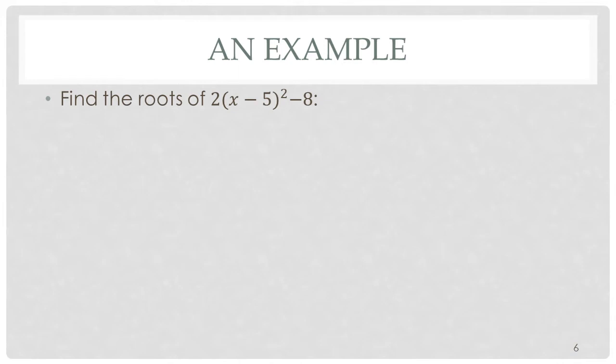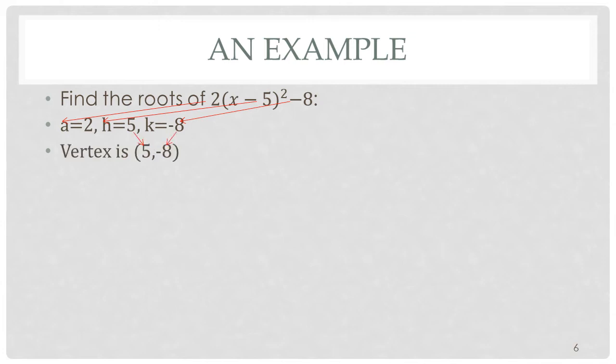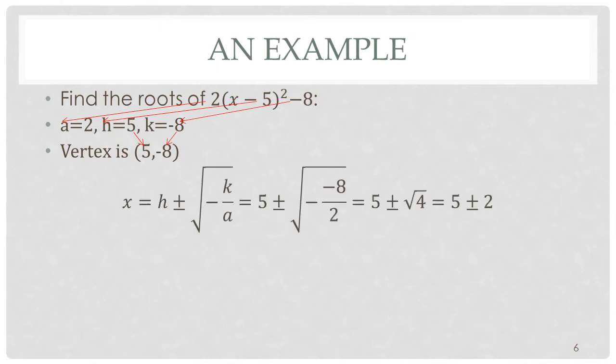Let's run through a simple example. We want to find the roots of 2 times the quantity of x minus 5 squared minus 8, set equal to 0. We know that a is equal to 2, h is equal to 5 — notice the negative sign did not get translated — and k is equal to negative 8; in this case the negative sign did get translated. That's the only thing you have to be careful with. The vertex is 5 and minus 8. Plugging it into our vertex root equation, we have 5 plus or minus the square root of negative negative 8 divided by 2. That's 5 plus or minus the square root of 4, which is equal to 5 plus or minus 2. So our x values are x equals 3 or x equals 7.